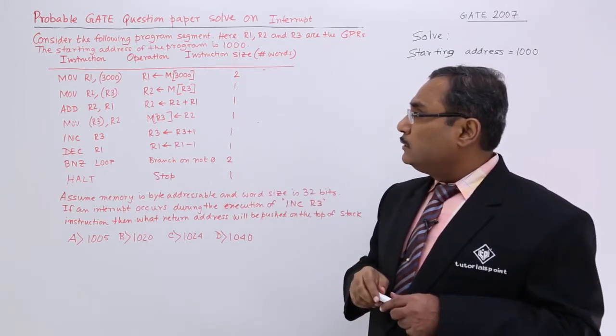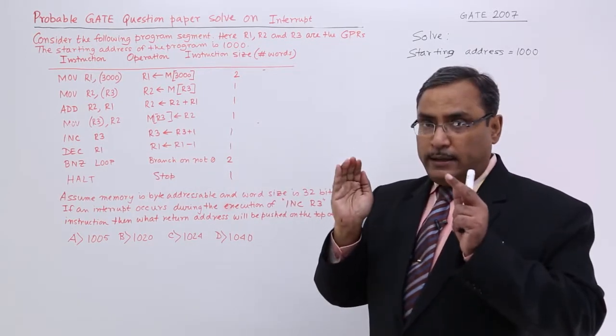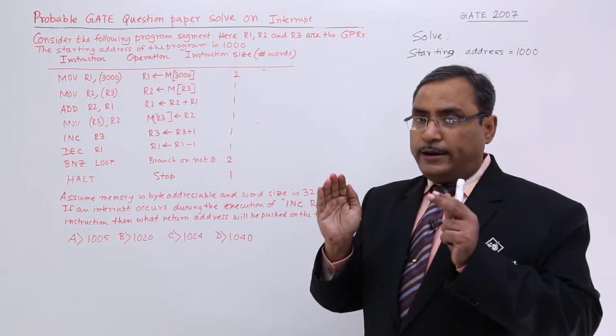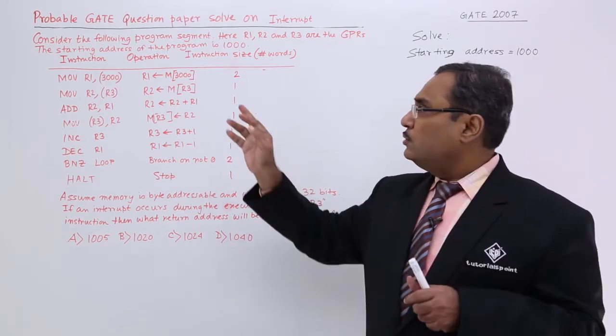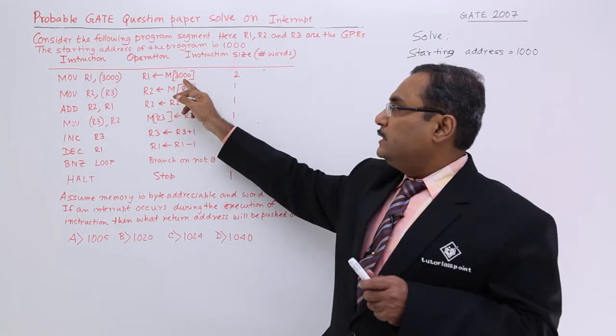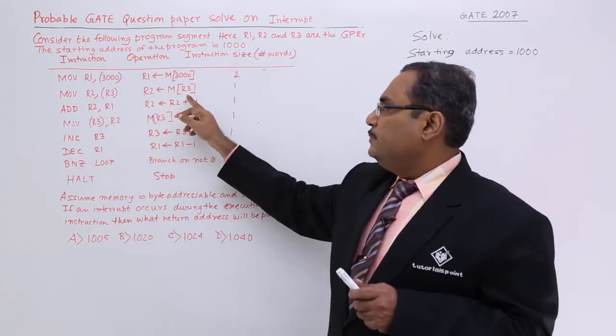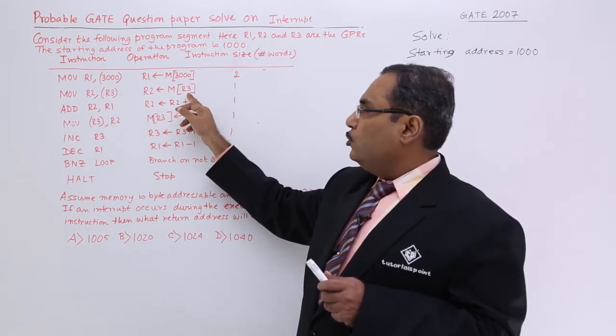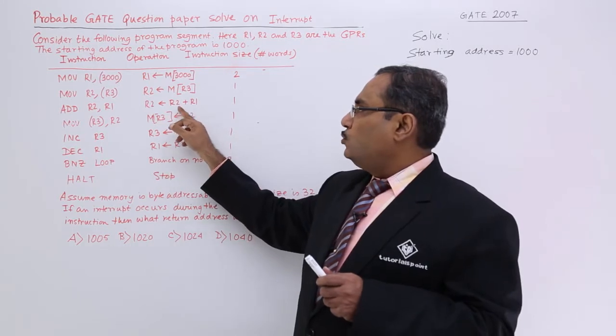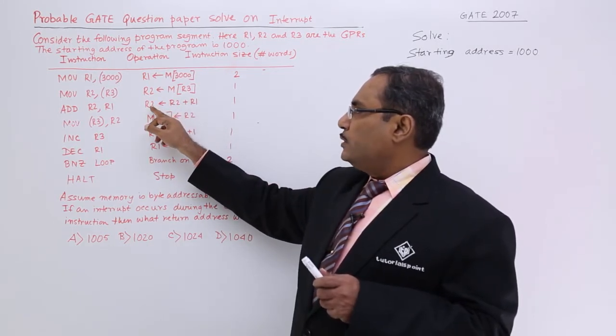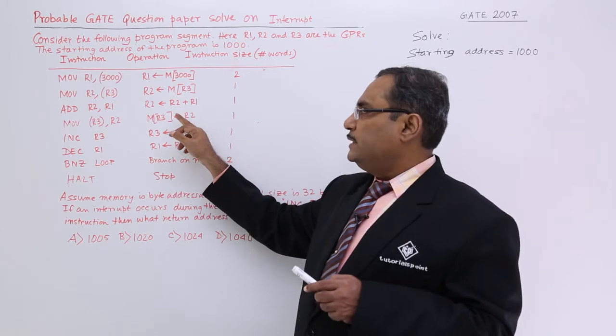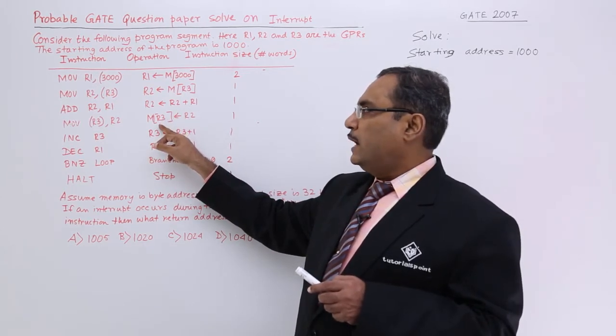Move R1, 3000 within bracket that means 3000 is not an operand, but address of the operand. Content memory content of 3000 will be moved to R1. Similarly, the register R3 content will be moving to R2. R2 R1 will be added and that will be stored in R2. R2's content will be saved in the memory location pointed by R3.